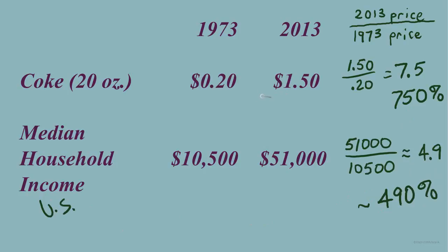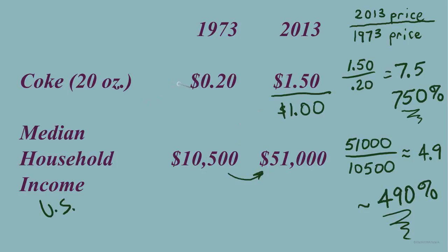So in this 40-year span, both the price of Coke and the median household income have increased. With these fractions, we can see that the relative increase in the price of Coke is greater than the relative increase in median household income. To really understand whether Coke's price has increased too much, we need to think about how the prices of so many other things in life change. Inflation is going to affect almost all of these, so it's important to see how various products and services change in value over time.